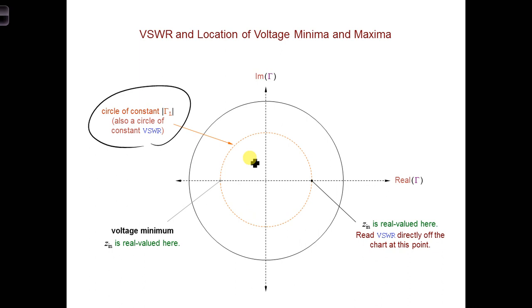First, the VSWR can be read off the Smith chart where the circle, the orange dotted circle, crosses the horizontal axis to the right of the origin, so right here. We can read off the VSWR value directly at this point.